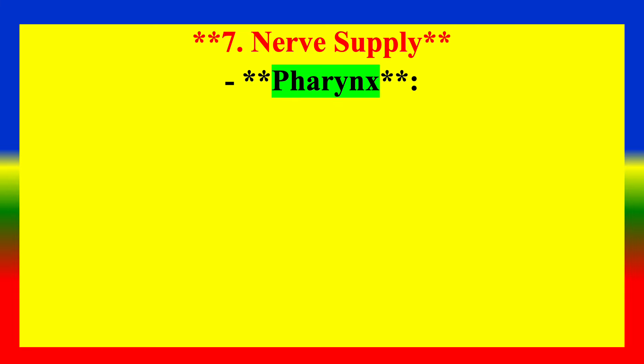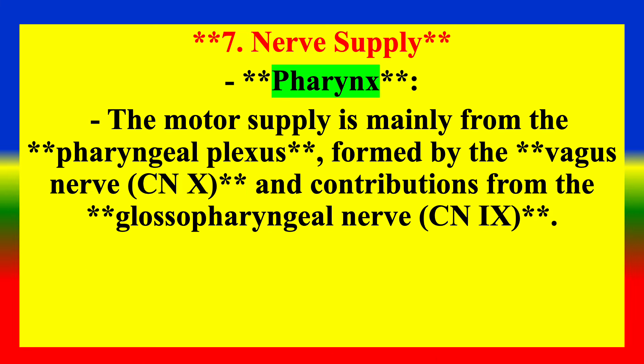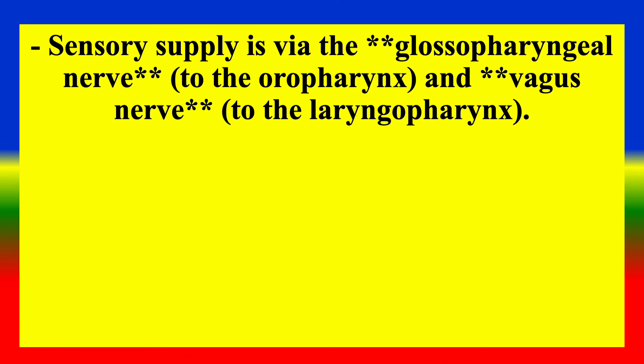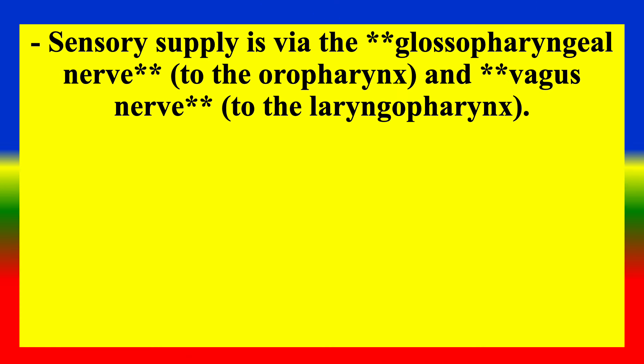Nerve Supply — Pharynx: Motor supply is mainly from the pharyngeal plexus, formed by the vagus nerve (CN10), with contributions from the glossopharyngeal nerve (CN9). Sensory supply is via the glossopharyngeal nerve and vagus nerve.